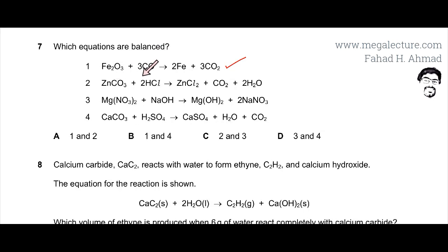If you look at the next equation, zinc looks balanced, that's one and one. Carbon is also balanced, one carbon over here, one carbon over here. If you look at hydrogen, there are two hydrogens over here. And over here, there are two water molecules, that means there are four hydrogens. So this equation, the hydrogen is not balanced.